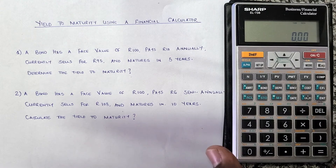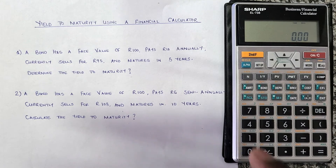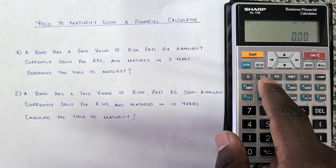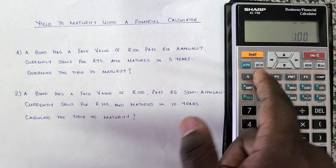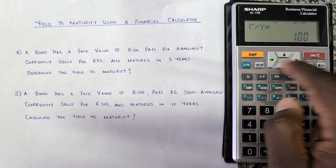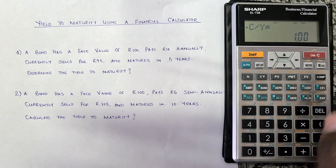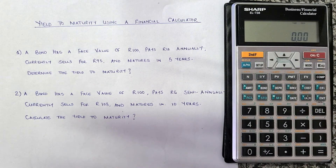We know this financial calculator defaults to compounded once per year, but let's double-check. Press Second Function and then I/Y — you can see on top it says P/Y, which is payments per year, and it's showing one. If I press the down arrow it's still one. So I press ON/C to come out of that. Good — payments per year is confirmed as one.